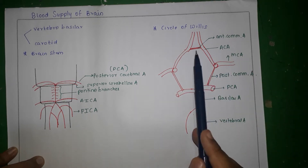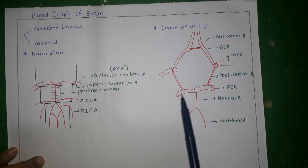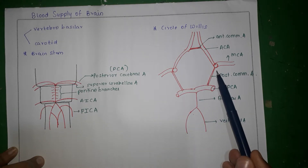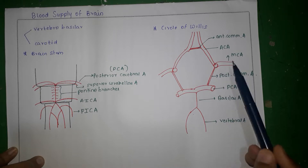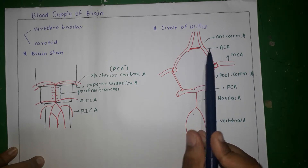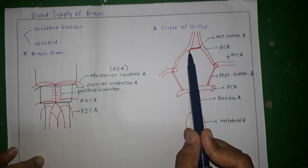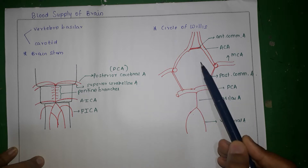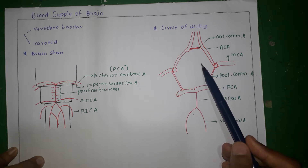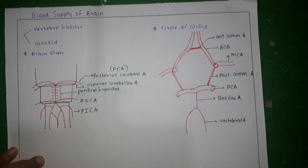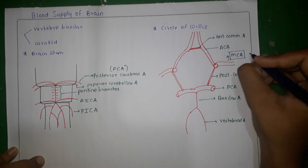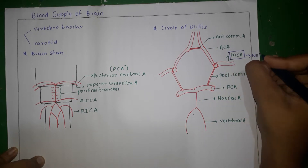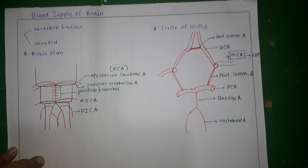The whole circle formed by the posterior cerebral artery, posterior communicating artery, internal carotid artery, anterior cerebral artery, and anterior communicating artery together is called the circle of Willis. One important point to note is that the middle cerebral artery does not take part in the formation of the circle of Willis.